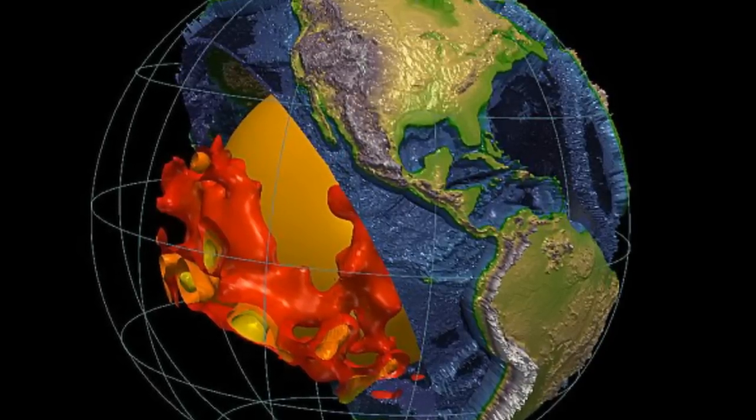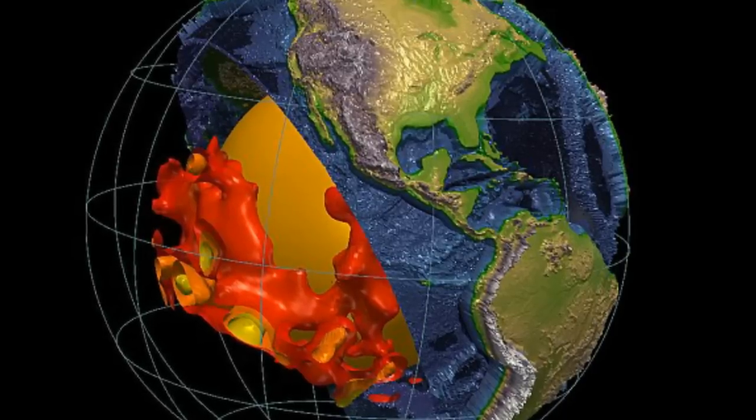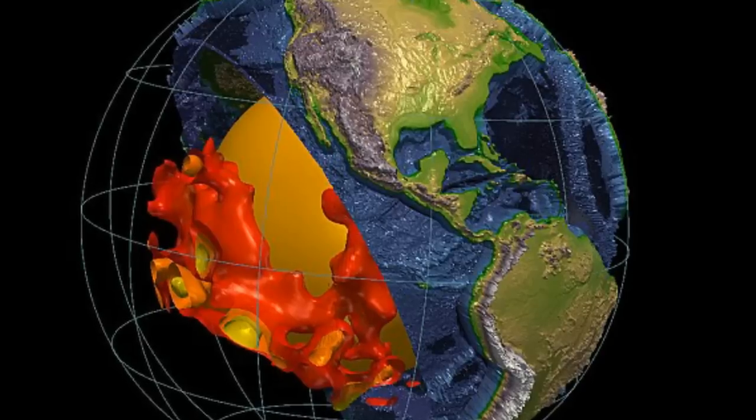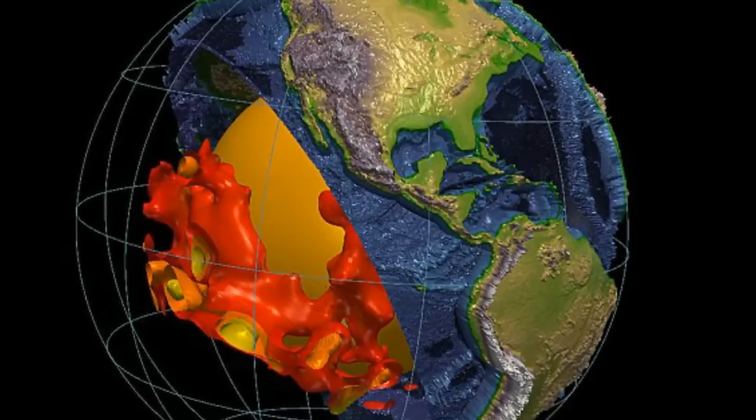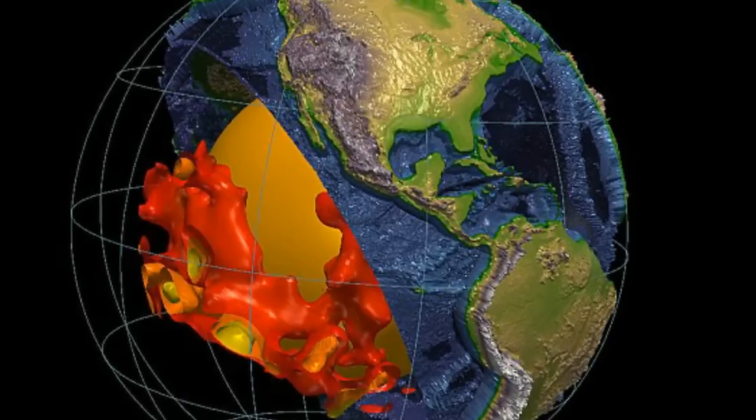The continent-sized blobs sit on top of Earth's core, 1,800 miles below the surface, and are now thought to be made of a different material than that which comprises the rest of the mantle.